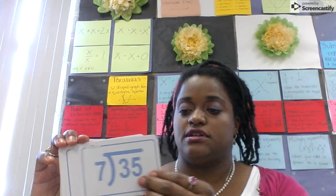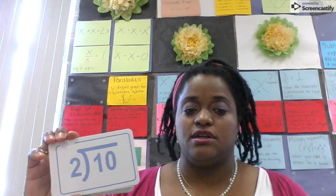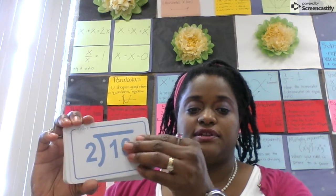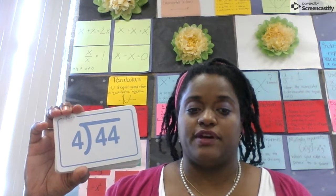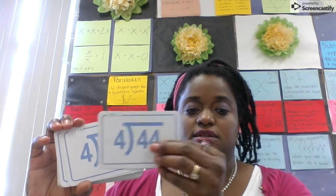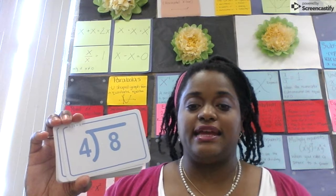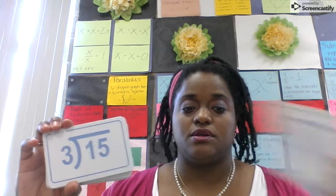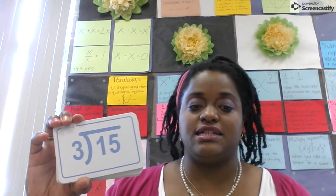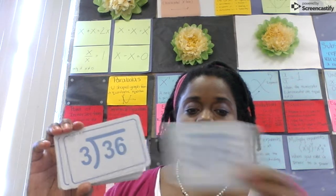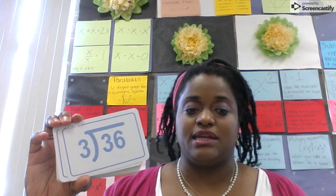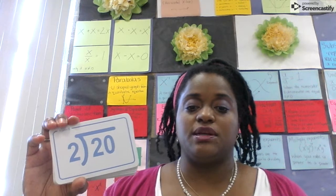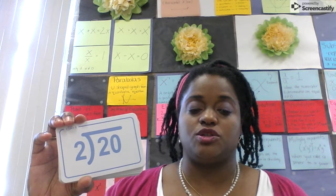35 divided by 7 is 5. 10 divided by 2 is 5. 44 divided by 4 is 11. 8 divided by 4 is 2. 15 divided by 3 is 5. 36 divided by 3 is 12. 20 divided by 2 is 10.